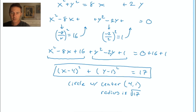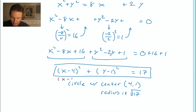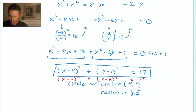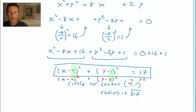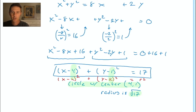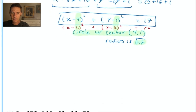On the right-hand side we've got 17 — that's fine, we can leave it there. Matching against the standard form x minus h squared plus y minus k squared equals r squared: h is positive 4 and k is positive 1, even though the equation shows negative 4 and negative 1 in the expression. So the circle has a center of positive 4 comma positive 1, and the radius is equal to the square root of 17.